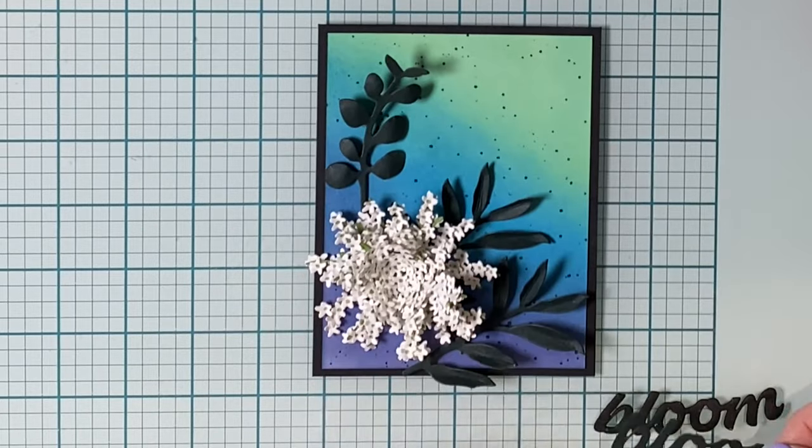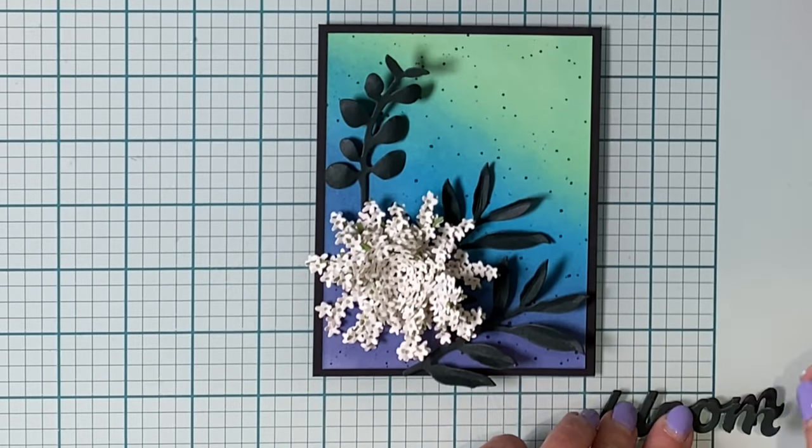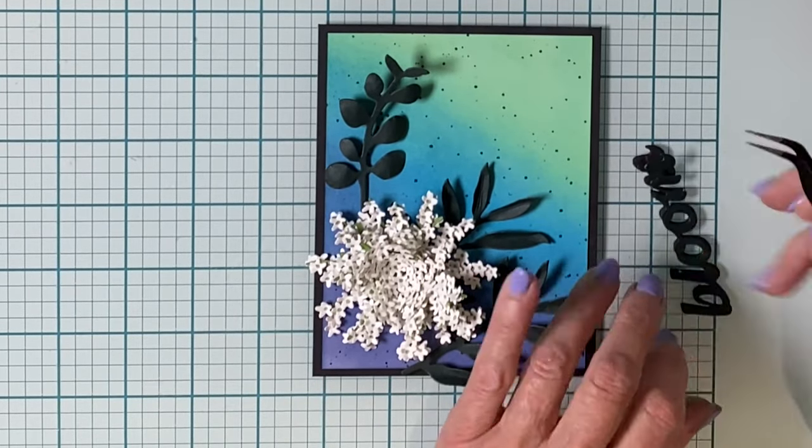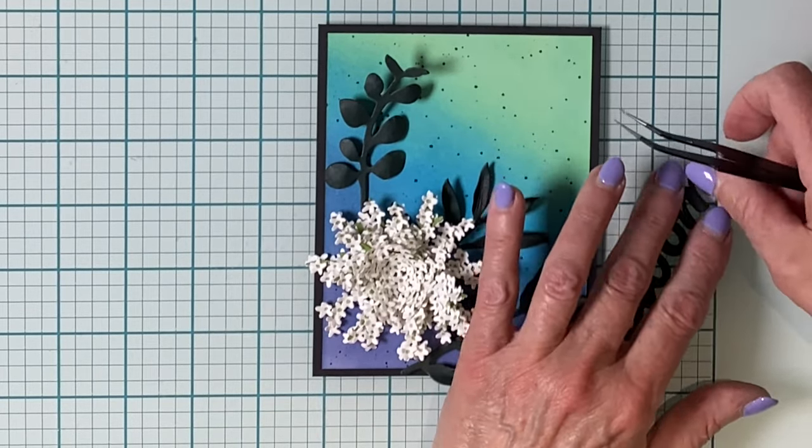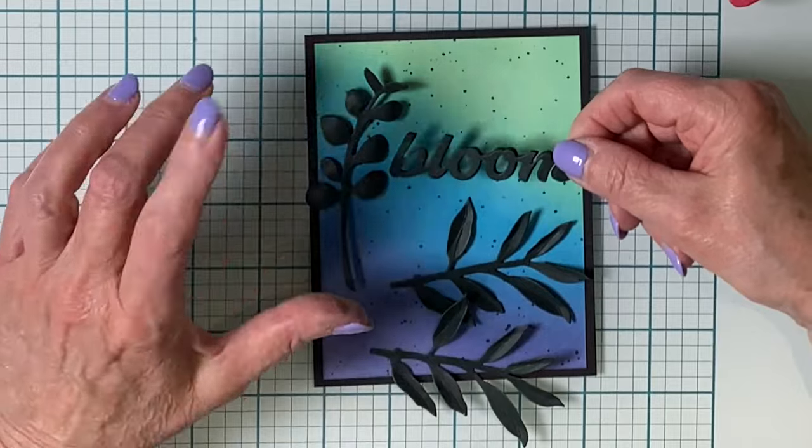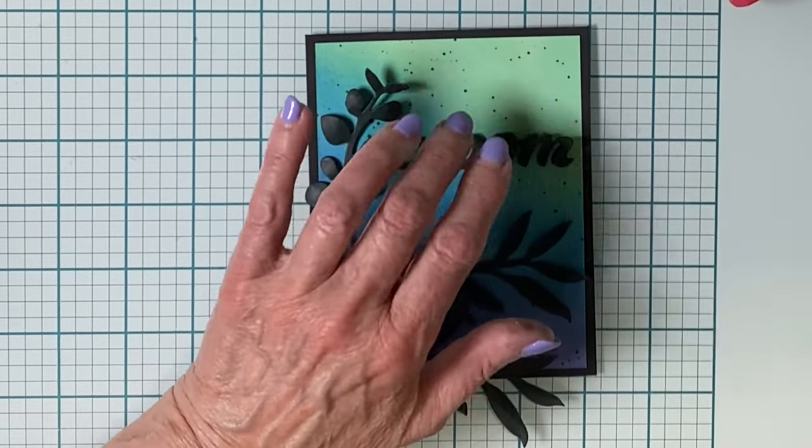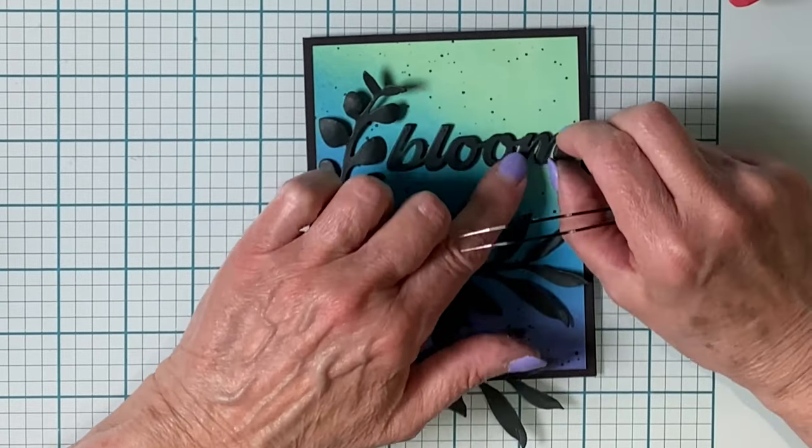The word bloom was die cut from the dark green cardstock and black sheet foam. The cardstock word is adhered to the foam die cut. And now I know exactly where I want it on my card front, so I can pop that in place.